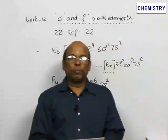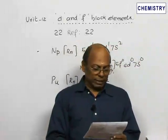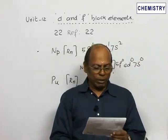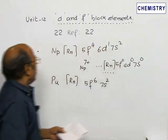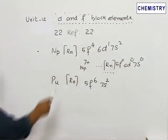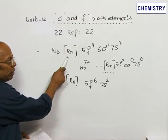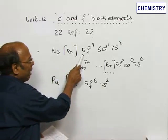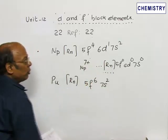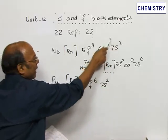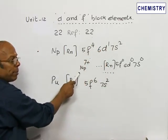Reference 22 is about the +7 oxidation state of the F-block elements. Neptunium has inert gas radon configuration followed by 5F4 6D1 7S2. If all these 7 electrons are removed, then neptunium 7+ in that oxidation state has the stability of inert gas radon configuration.